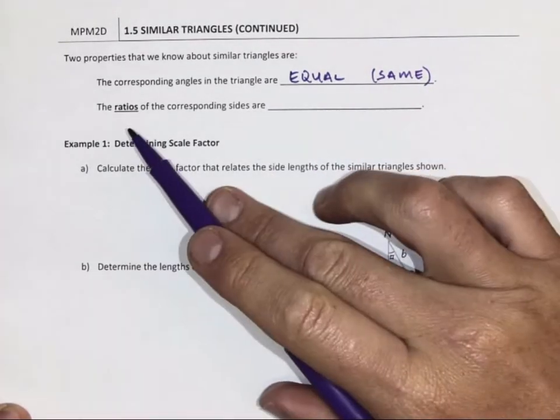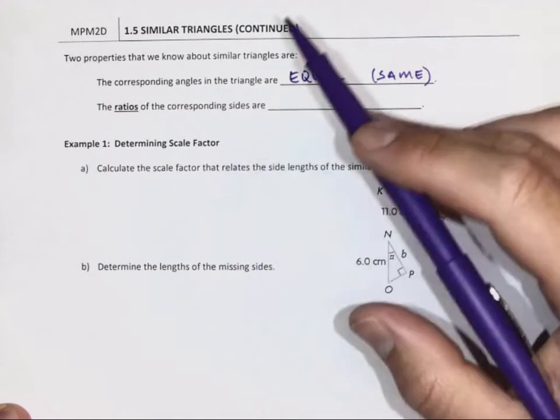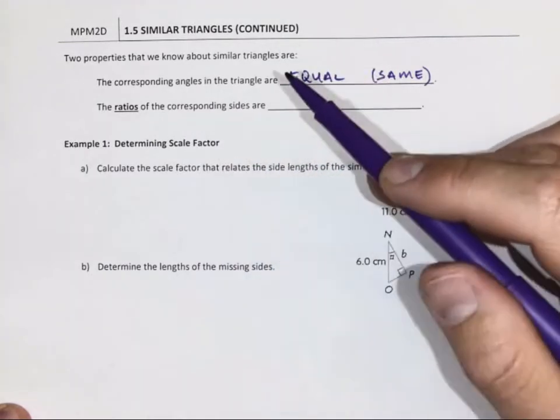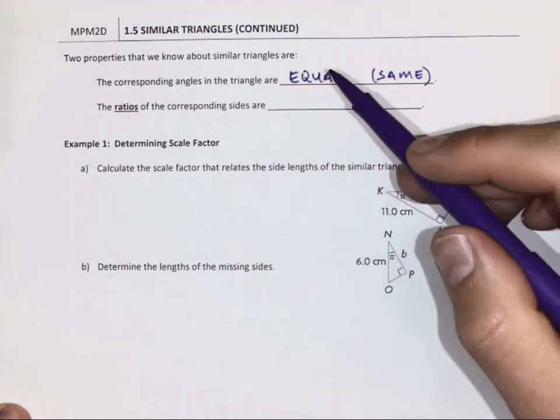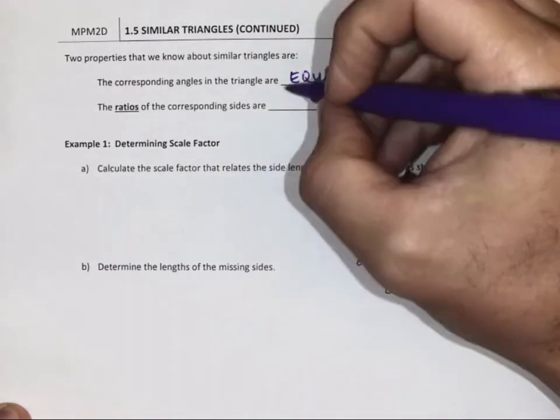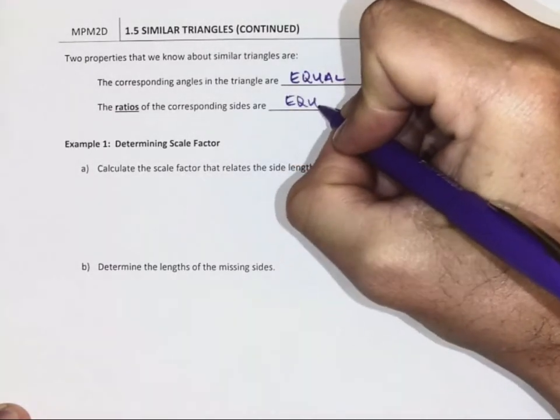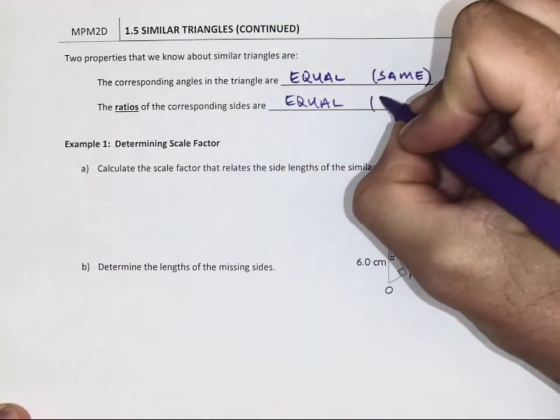The ratios of the corresponding sides - so big divided by small for side A and what it matches up with, side B and side C, are all equal. That's still fancy for the same.